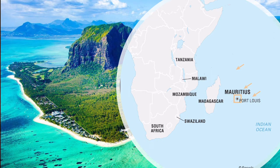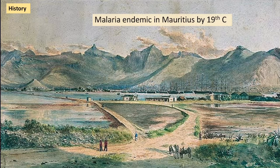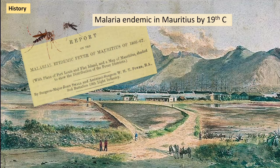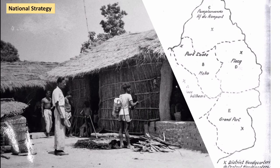The place we're going to look at is Mauritius. It's a small island in the Indian Ocean, not far from Madagascar, and the disease they had there was malaria. It was endemic to the country since the 19th century, and in 1867 they had quite a severe epidemic that killed nearly an eighth of the population. So it was a very significant problem for many, many years.